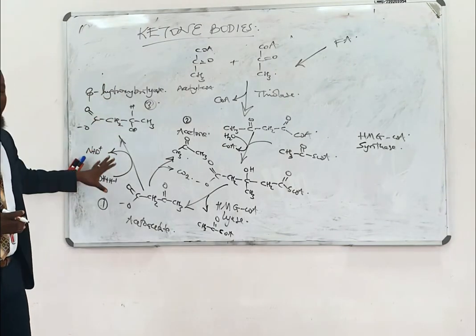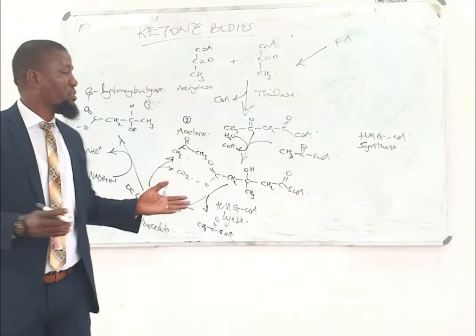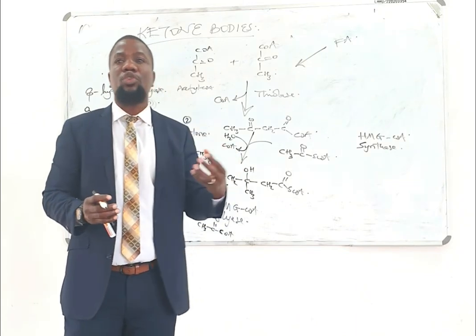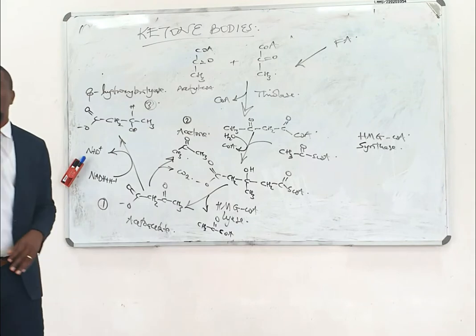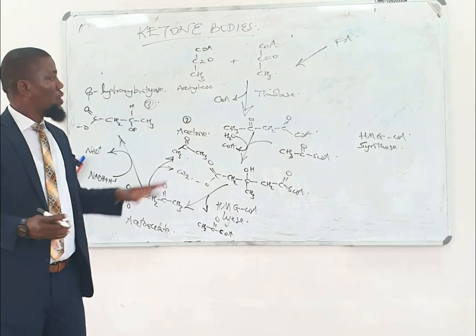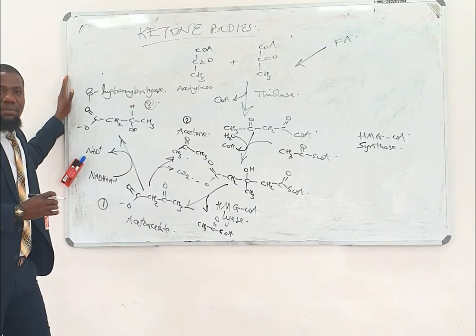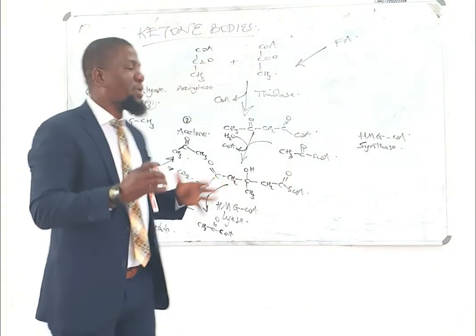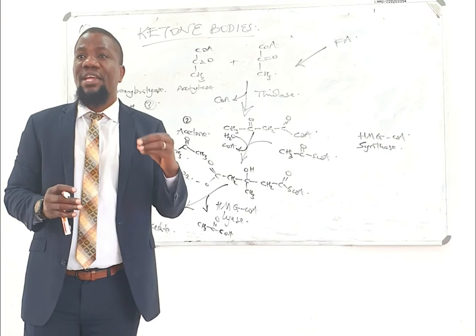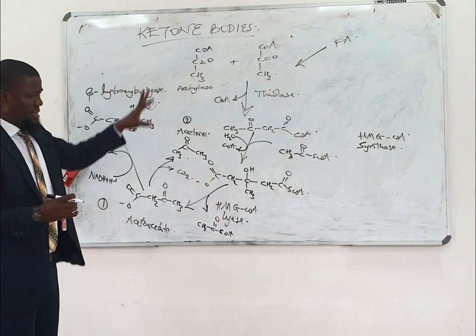These ketone bodies are carried through the blood and taken to peripheral tissue where they are used as a source of energy. Being polar, they are easily carried through the blood and taken up by peripheral tissue to produce acetyl-CoA, which can be used as a source of energy during starvation. The process of ketone body synthesis happens in the liver. As for breakdown, the liver lacks a very essential enzyme for breaking down these ketone bodies, which is why they are not used as an energy source there.